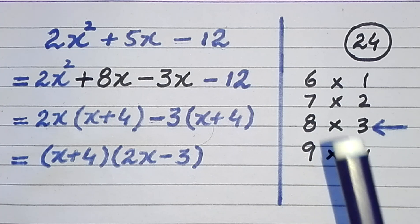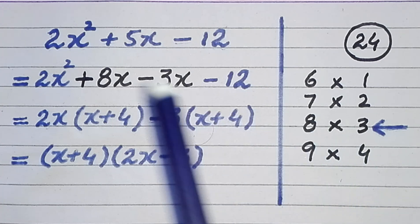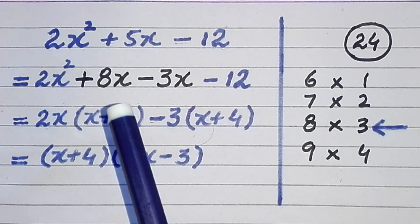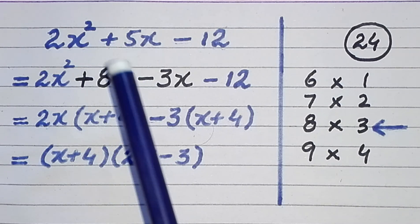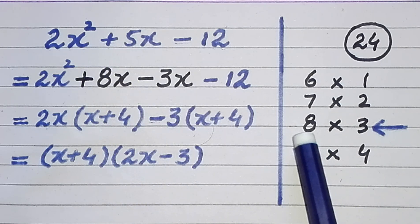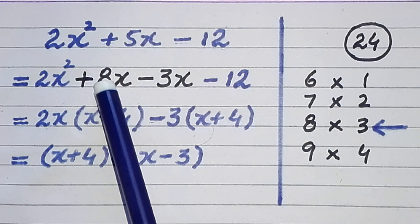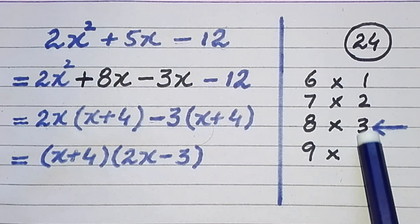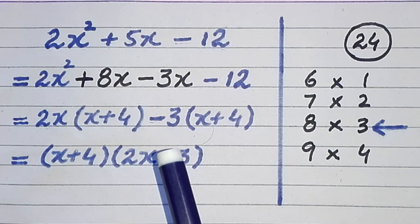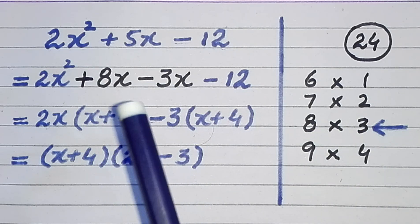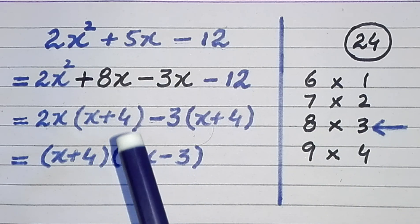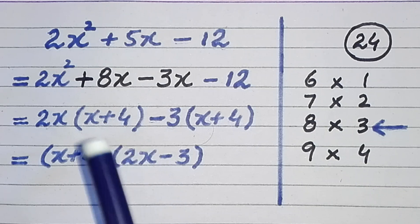In the fifth step we break the middle term into two terms. So in place of plus 5x we write plus 8x and minus 3x. In the sixth and final step we do simple factorization.